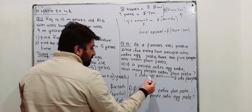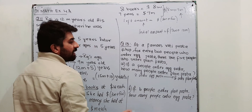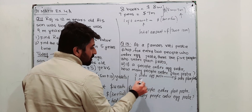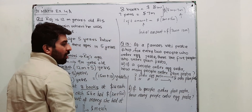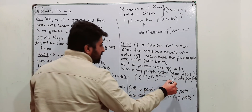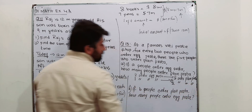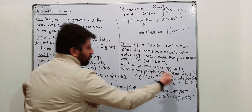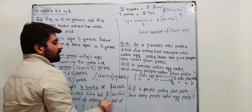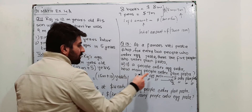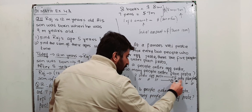Two order egg pratha; against that, five order plain pratha. If one person orders egg pratha, then how many will order plain pratha? Simply, that will be 5 divided by 2 — five by two order plain pratha. Divide two on both sides: two by two is one, five by two is five by two.